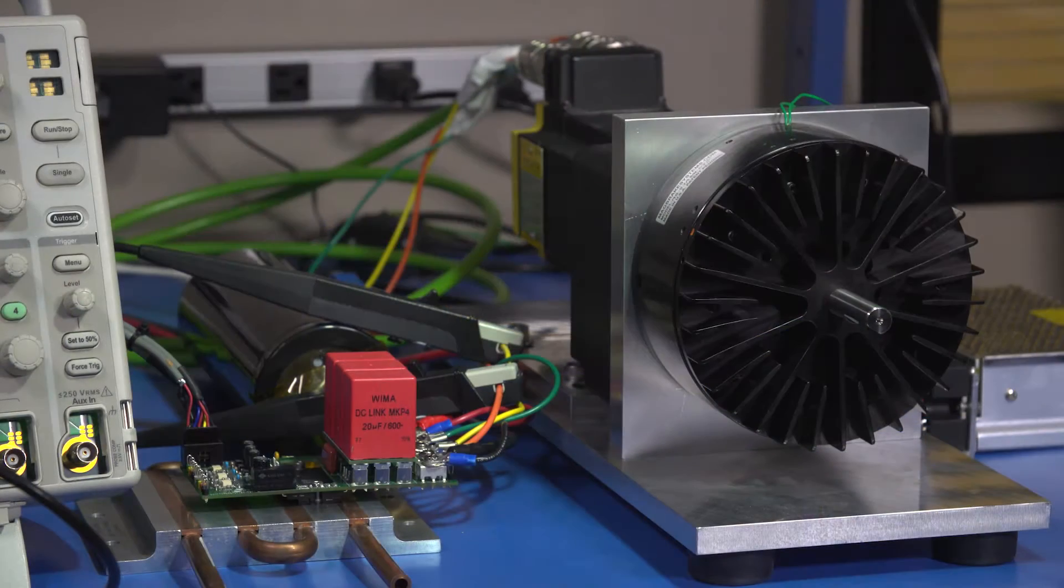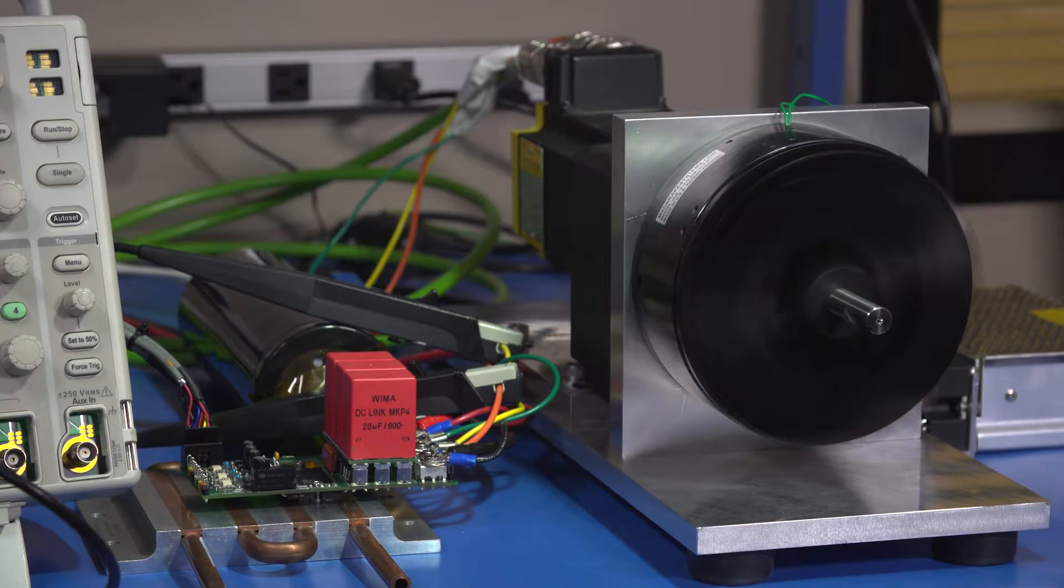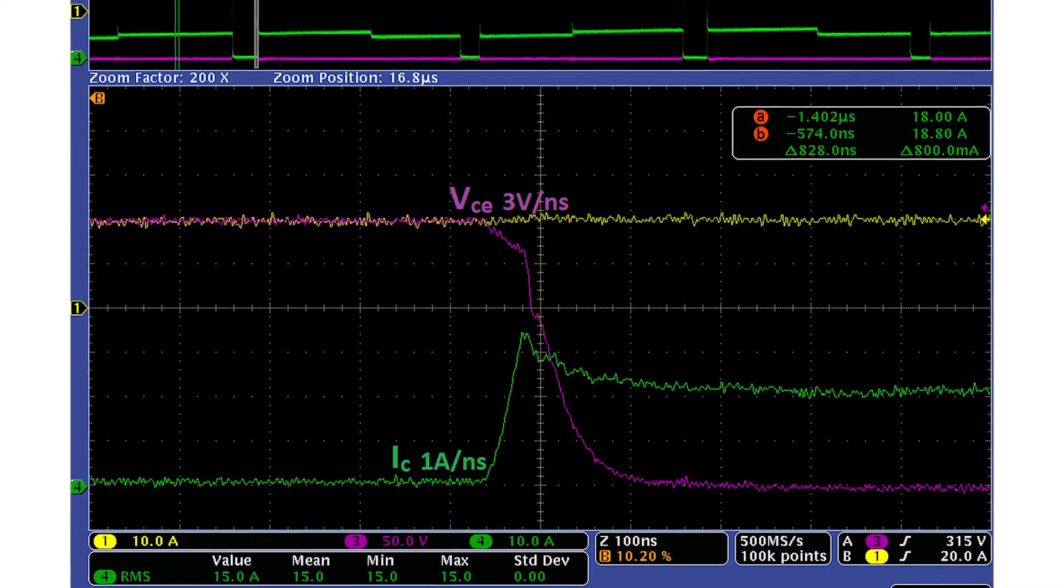On the bench, I have a module installed on our evaluation board to drive a motor on the dyno. We're driving the motor at 25 amps. While the motor is spinning, we can zoom in on the individual switching events that we see here.